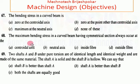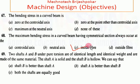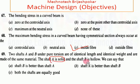The maximum bending stress in a curved beam with a symmetrical section always occurs at the inside fiber. For question 69: two shafts A and B of identical length and weight, made of the same material — shaft A is solid and shaft B is hollow. Shaft B is better than shaft A, so the answer is A.